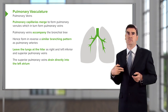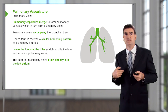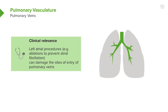Two veins come from the right and two veins from the left, and these drain directly into the left atrium. The clinical relevance of this drainage has become more important recently because of an increasing number of patients with atrial dysrhythmias undergoing ablation procedures. Those ablations are often around the origins of where the veins enter the left atrium, and that can cause mechanical problems with drainage of blood back into the left atrium from the lungs.